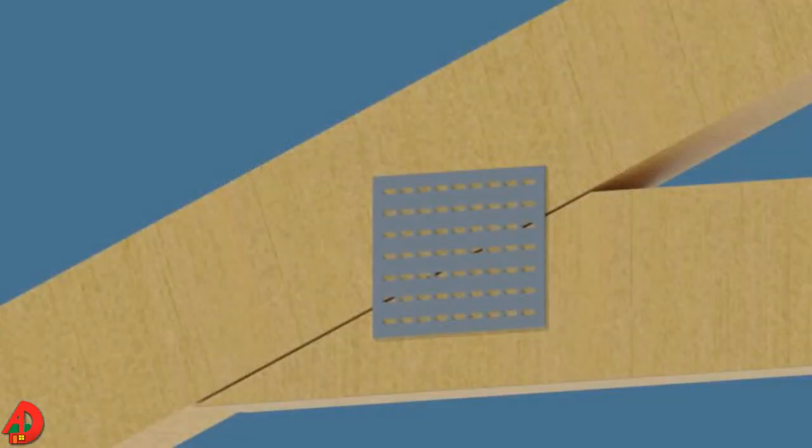Metal connector plates tie together the cords and web members and distribute and transfer loads between adjacent members. Metal connector plates are manufactured from galvanized structural steel that has been machine stamped to produce small teeth that protrude from the face of the plate. Tooth length ranges from a quarter inch to one inch.